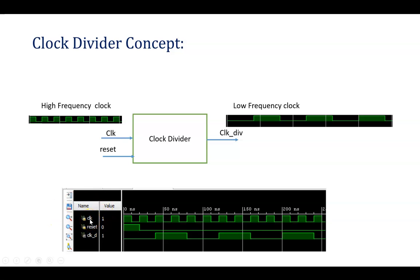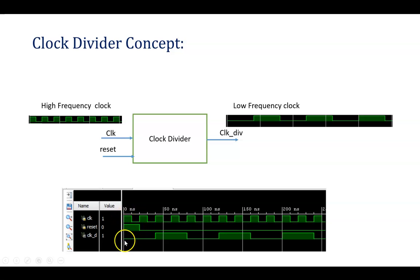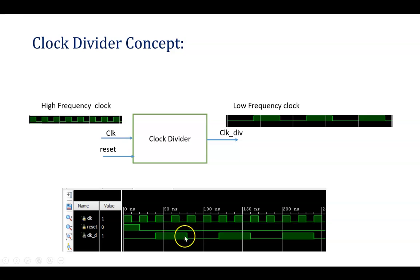Here you can see the simulation result of the clock divider. The main clock is shown along with the reset signal. This is an active-high reset, meaning the circuit resets when reset is 1, and normal clock division occurs when reset is 0. When reset is 1, the output clock_D remains 0. When reset goes to 0, clock division begins, and for every 4 clock cycles of the main clock, one clock cycle of clock_D is generated.